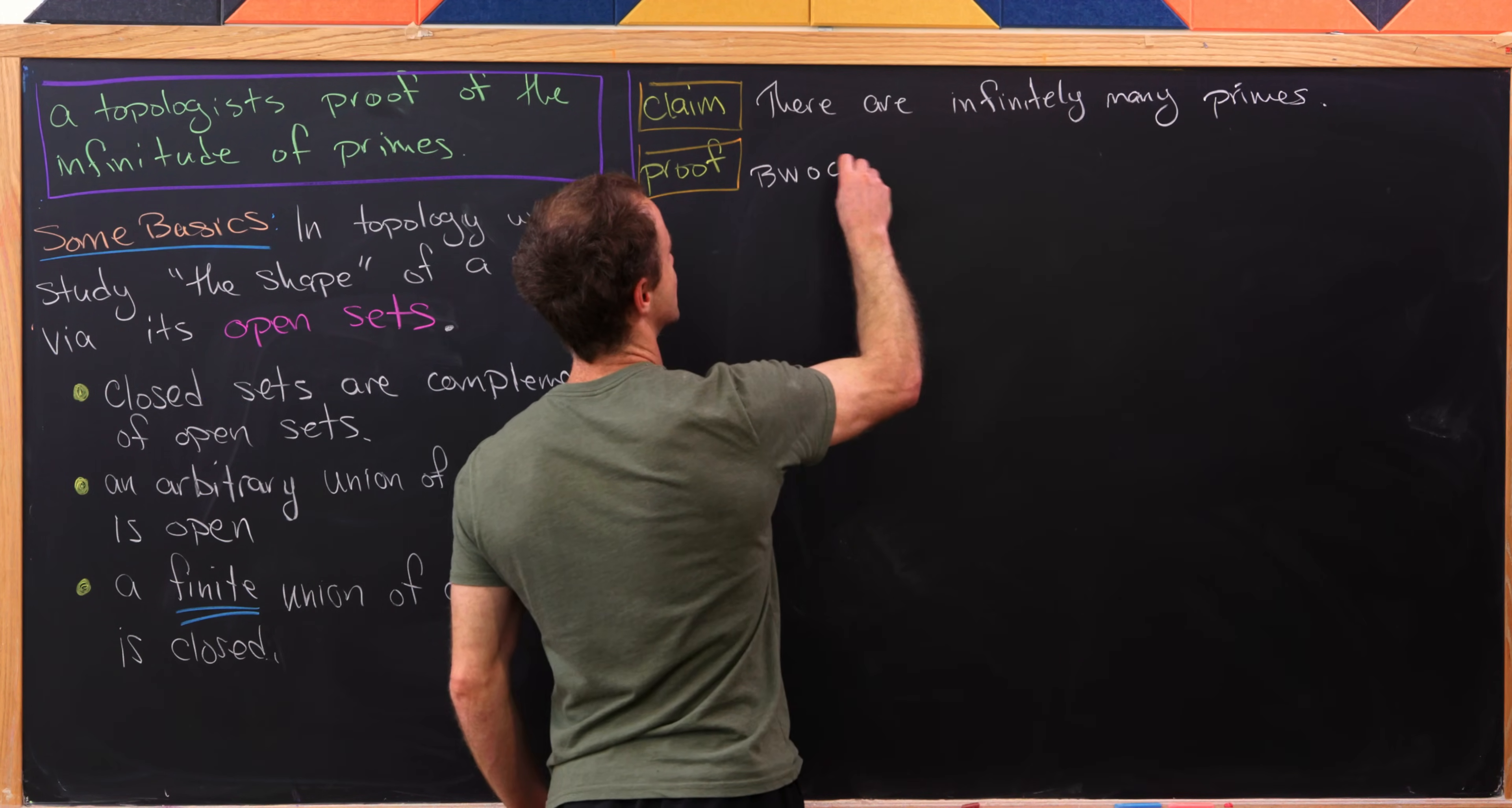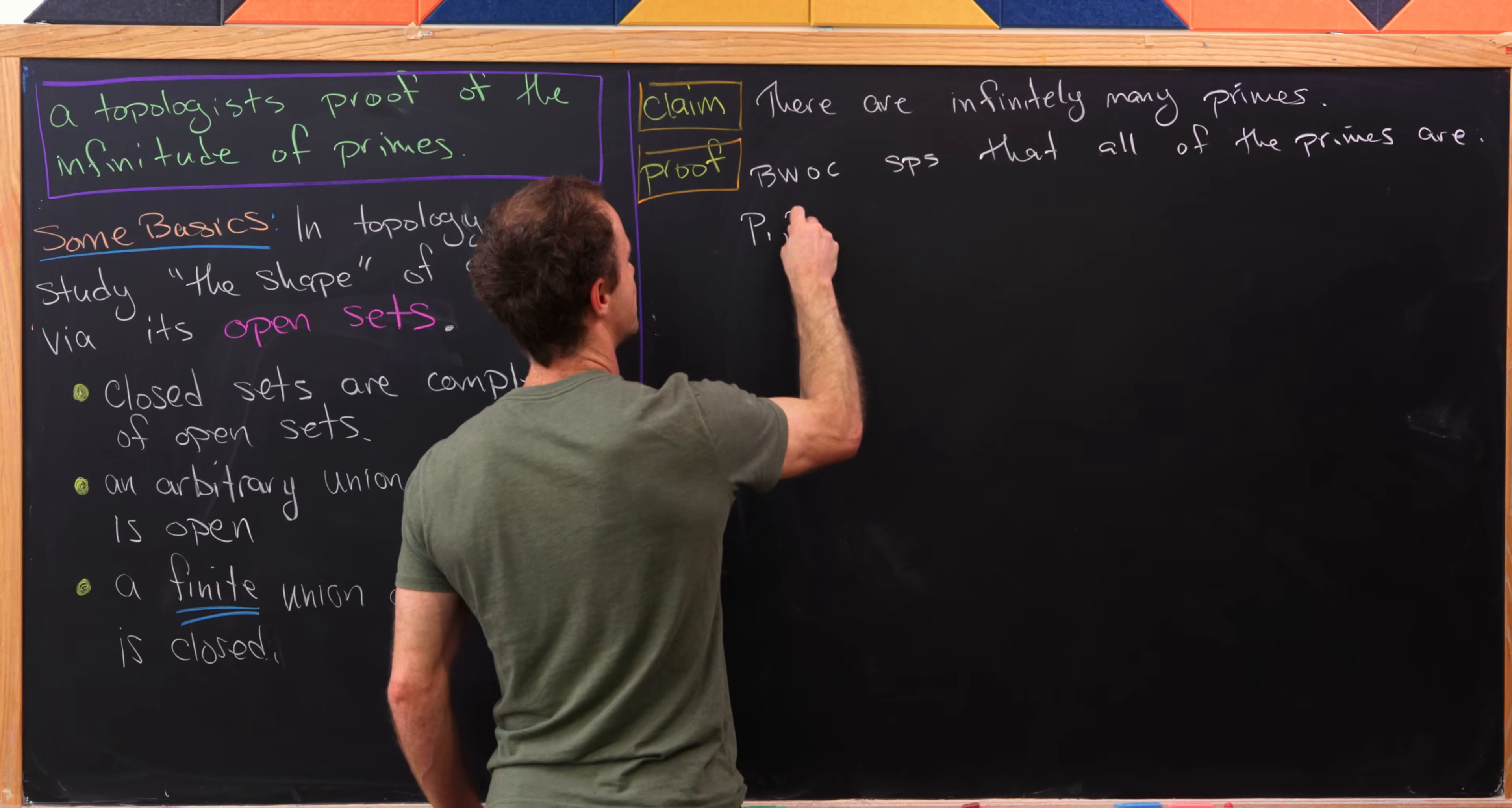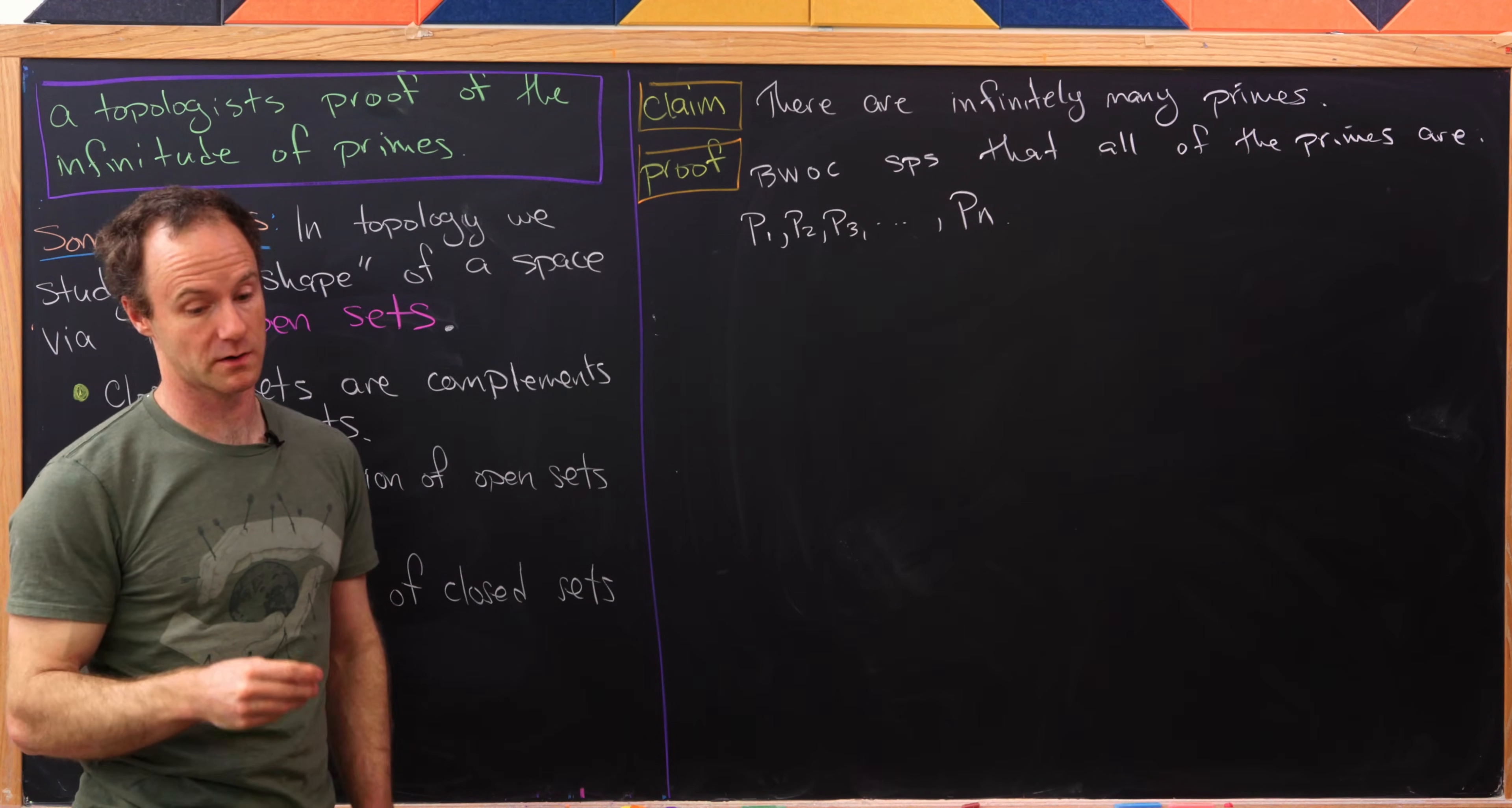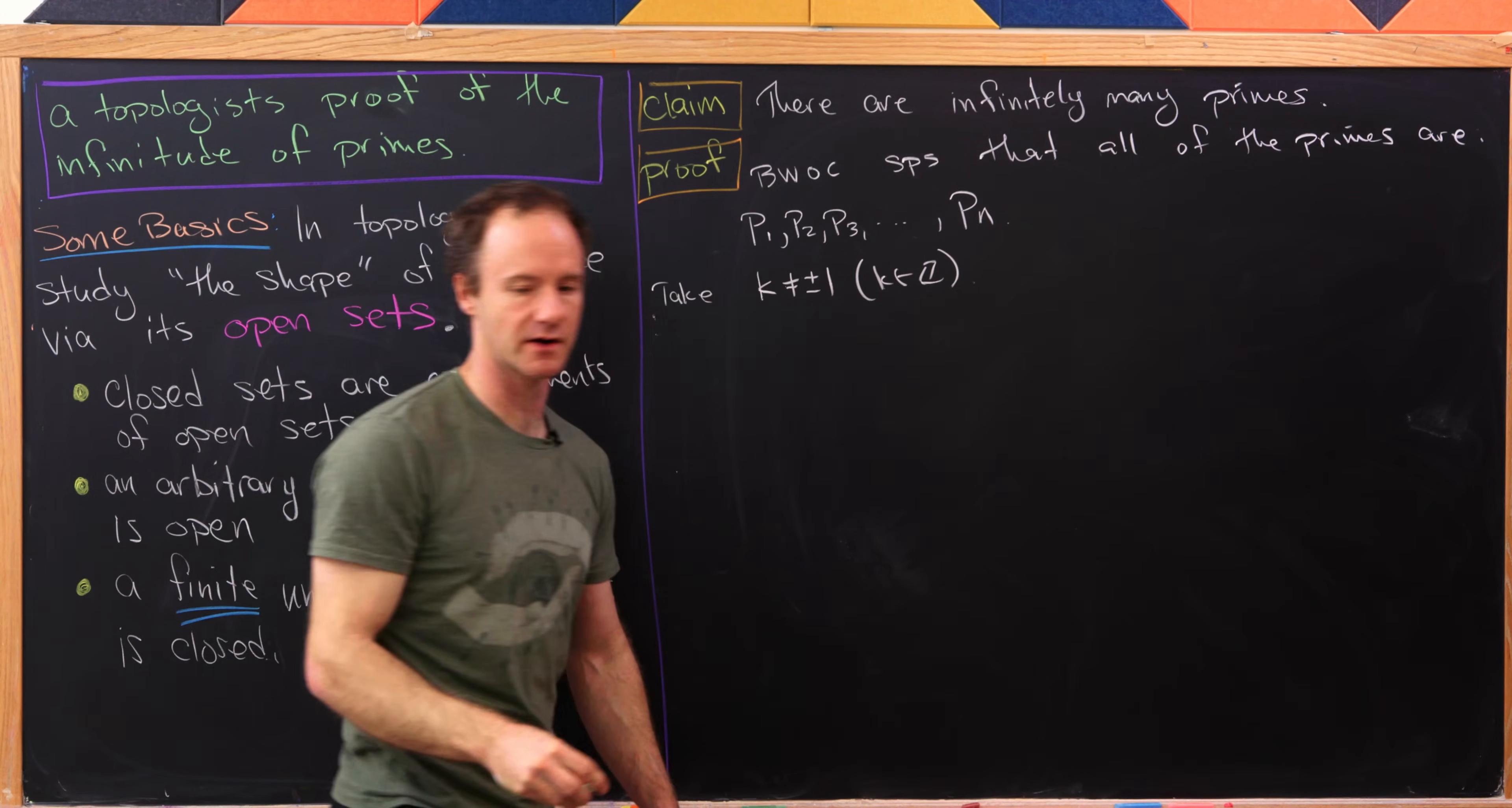Okay, so let's by way of contradiction, suppose that all of the primes are on the following list. So p1, p2, p3, so on and so forth, up to pn. So I've got n total primes, but no more. And now let's take some integer k, which is not equal to plus or minus one. And let's just point out that k is an integer here.